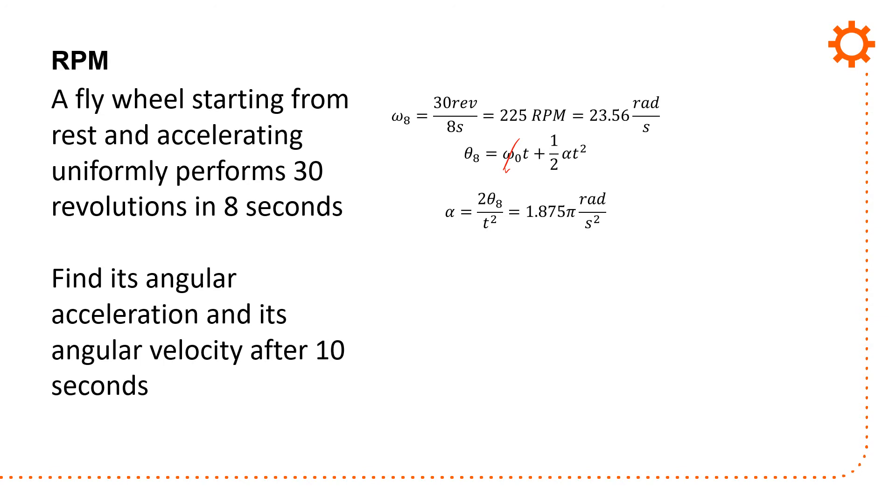You get theta 8 which is equal to omega t plus one half alpha t squared. Starts at zero, and so if that's true, this term goes away and you end up with 2 times theta 8, that's the displacement that it's taken, over t squared. And knowing alpha, you can find the final angular velocity: omega equals omega naught plus alpha t. Omega equals 58.9 radians per second. So where did I get those equations?